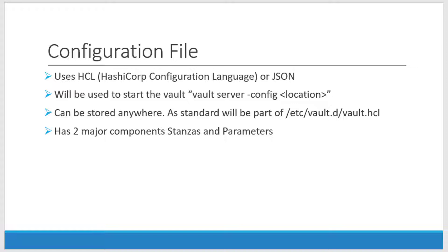The major content of the configuration file will be two components: parameters and stanzas. A parameter is nothing but a key and a corresponding value. A stanza is a collection of parameters and it is like a block. We will see a detailed example on how to write a stanza and what stanzas and parameters are allowed within the configuration file.